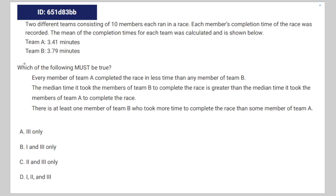We're given the following math problem: two different teams consisting of 10 members each ran in a race. Each member's completion time was recorded. The mean completion time for each team was calculated and is shown below — Team A: 3.41 minutes, Team B: 3.79 minutes. Which of the following must be true?